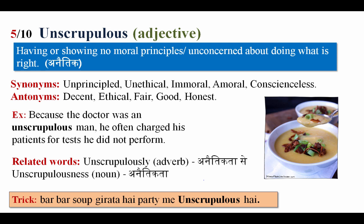The next word is unscrupulous, meaning having or showing no moral principles, unconcerned about what is right — unethic. Kisi ke paas koi moral principles nahi hai, ethics nahi hai, toh usko boltey hain unscrupulous. Synonyms: unprincipled, unethical, immoral, conscienceless. Antonyms: decent, ethical, fair, good, honest. Example: Because a doctor was an unscrupulous man, he often charged his patients for tests he did not perform.